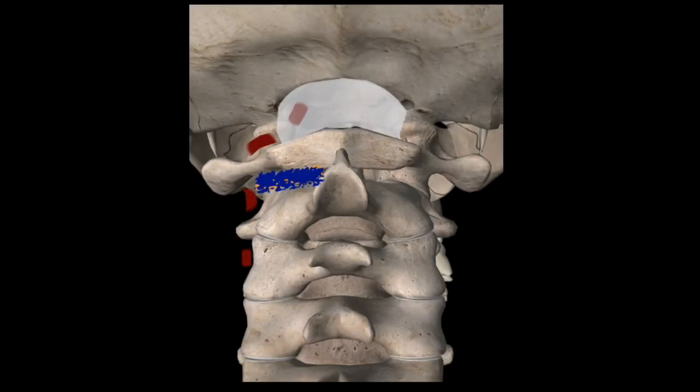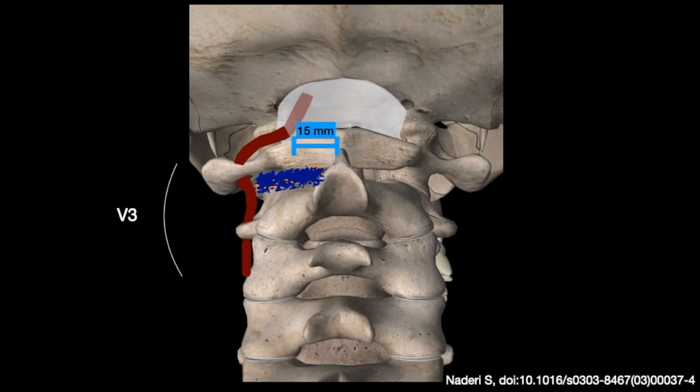The V3 part of the vertebral artery starts from C2 where the artery loops and turns laterally to ascend into the transverse foramen, continues through C1 to pierce the dura. The distance between the C1 midline posteriorly and the vertebral artery laterally is approximately 15 mm. This is important to know when exposing C1 in a posterior approach.